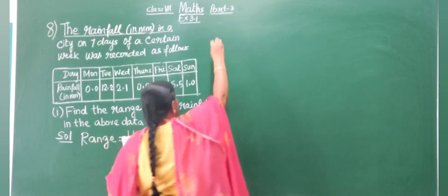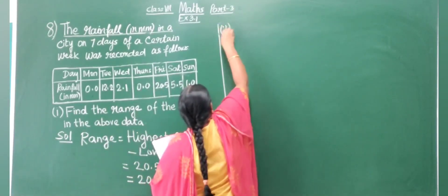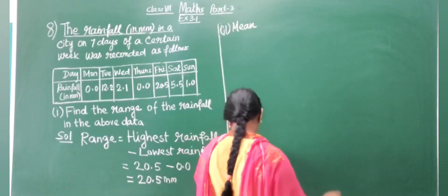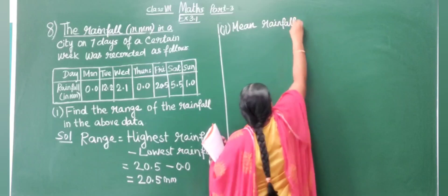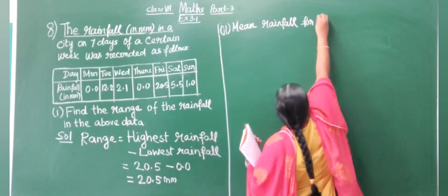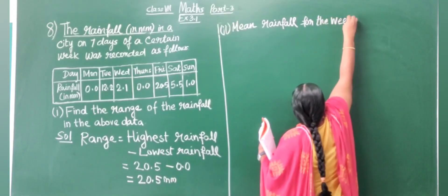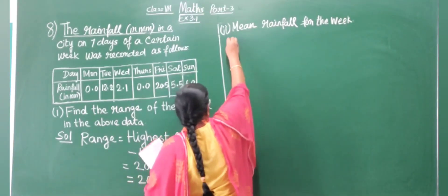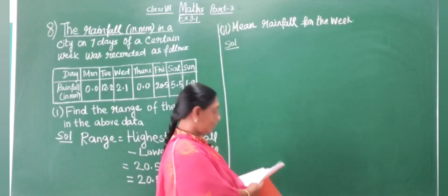The second question is the mean rainfall for a week. Mean equals total rainfall divided by number of days.